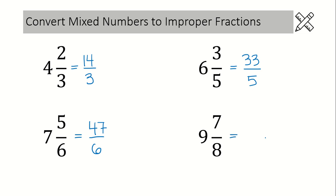In this example we have a denominator of 8. So we'll write that in first. Then we'll figure out the numerator. We'll do 8 times 9 which is 72 plus 7 is 79.